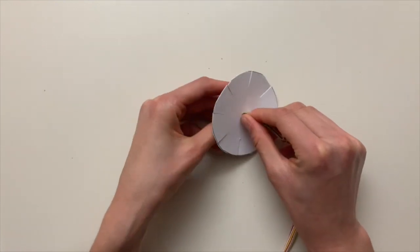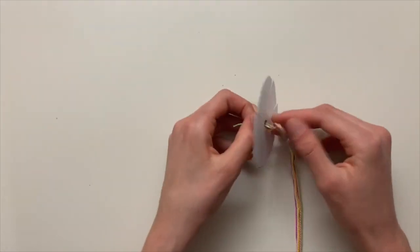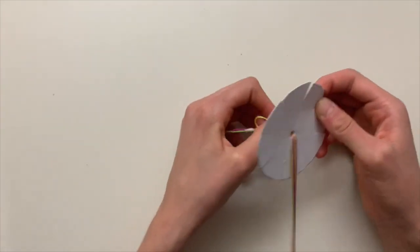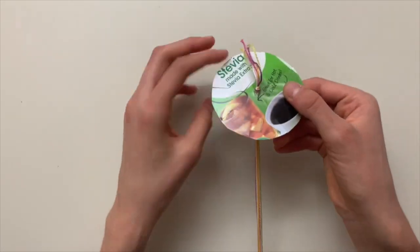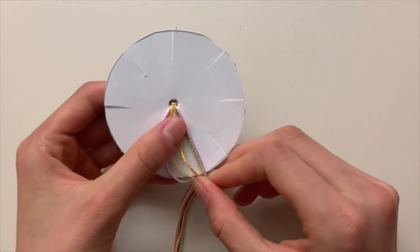In your craft kit there should be three sets of string, one of each size: small, medium, and large. Choose which one you would like to use and thread the seven strings that are tied by a knot through the hole.